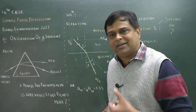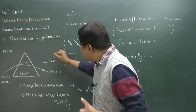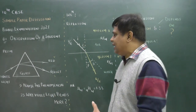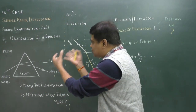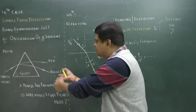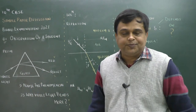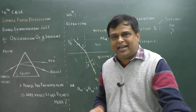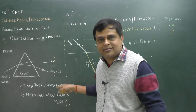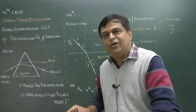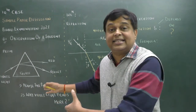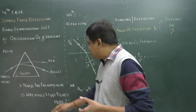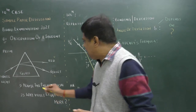All seven colors (VIBGYOR) are visible, and at the top the color is red, going out to white. So the first question the examiner asks: what is the student's observation — what is the phenomenon? You say it is a split of white light into its constituent seven colors. The first question: name the phenomenon.